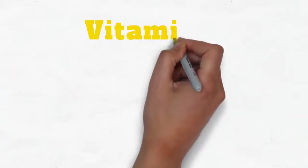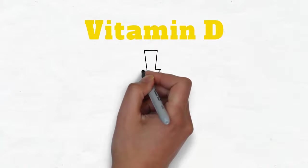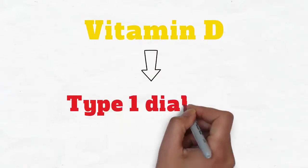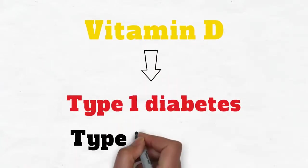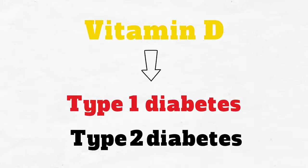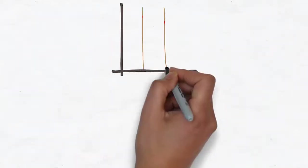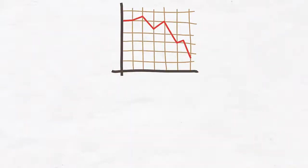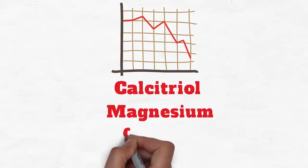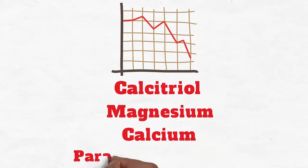Vitamin D deficiency is common with type 1 diabetics, although it can also affect those with type 2 diabetes. This deficiency is associated with much reduced serum levels of calcitriol, magnesium, calcium, and parathyroid hormone in diabetics compared to healthy subjects.